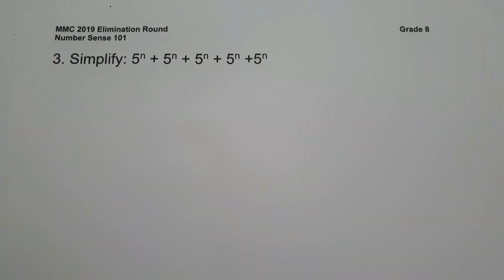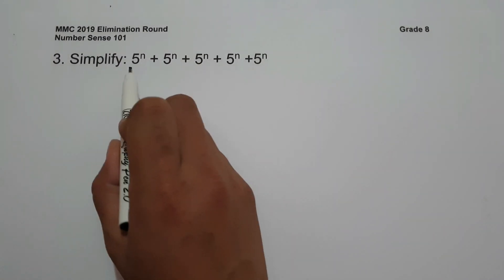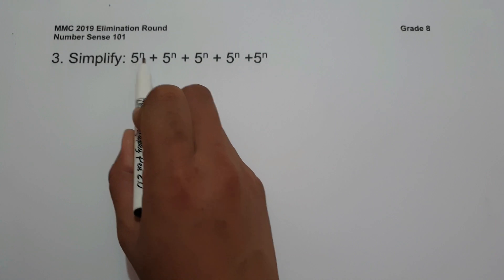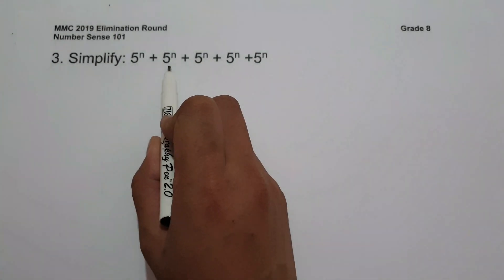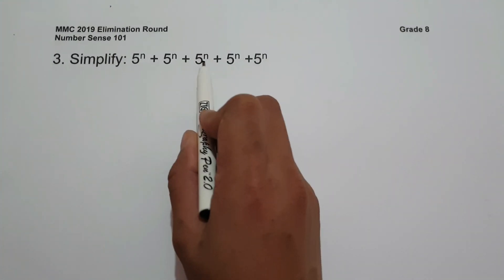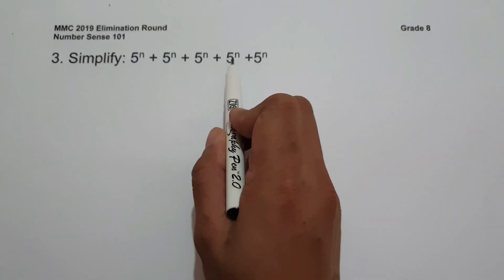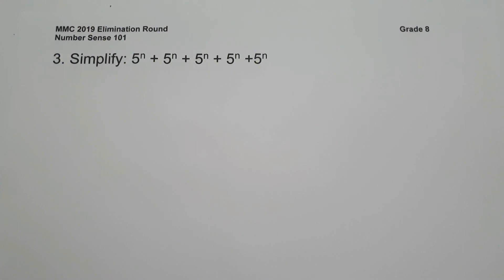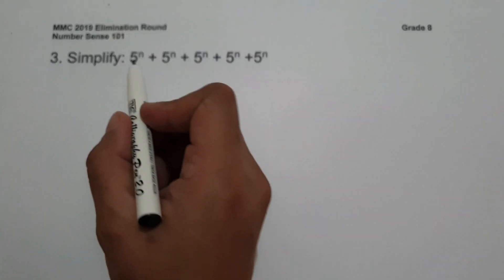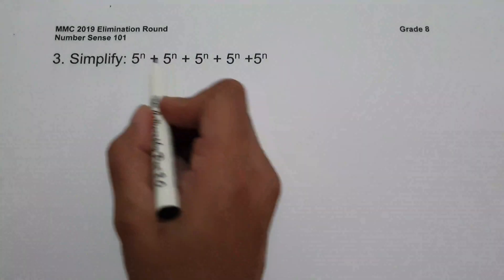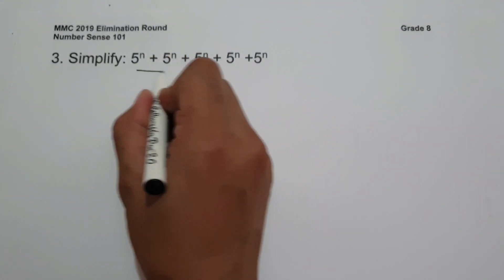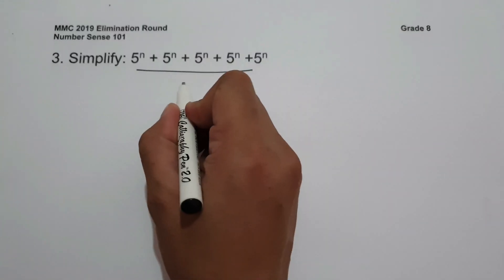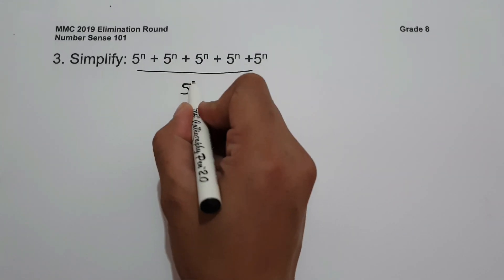On number 3, simplify 5 raised to n plus 5 raised to n plus 5 raised to n plus 5 raised to n. Since the greatest common factor of the given expression is 5 raised to n, we factor it out.